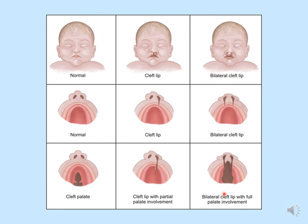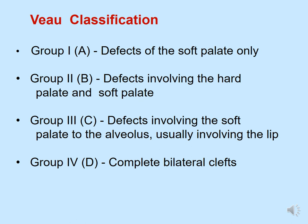This infographic shows the various presentations: normal palate, cleft palate alone, cleft lip alone, cleft lip with partial palate involvement, and bilateral cleft lip with palatal involvement. The Veau classification is the most accepted classification, categorizing cleft lip and palate into groups: Group A — defects affecting only the soft palate; Group B — defects affecting hard and soft palate; Group C — defect affecting soft palate extending to the alveolus, usually involving the lip; Group D — complete bilateral cleft.